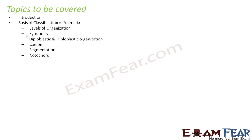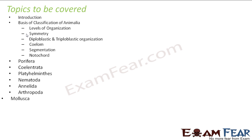Topics to be covered in this lesson are: Introduction and Basis of Classification of Animalia, wherein we will talk about levels of organization, symmetry, diploblastic and triploblastic organization, coelom, segmentation, and notochord. We will also talk about the different phyla — Porifera, Coelentrata, Platyhelminthes, Nematoda, Annelida, Arthropoda, Mollusca, Echinodermata, Hemichordata, and Chordata.